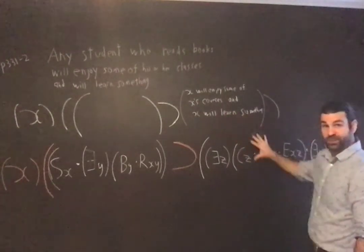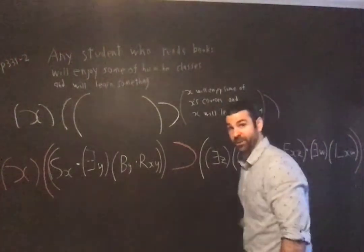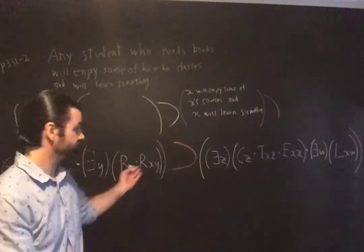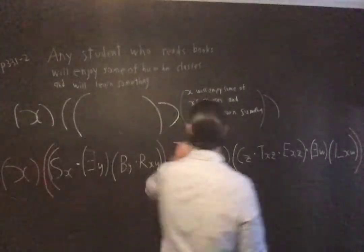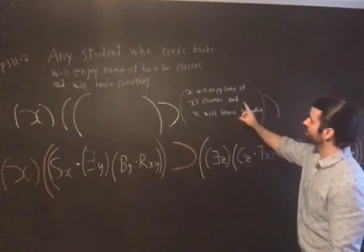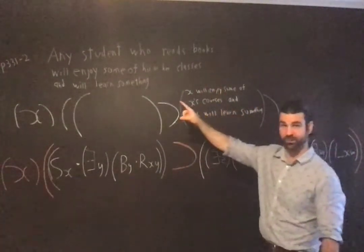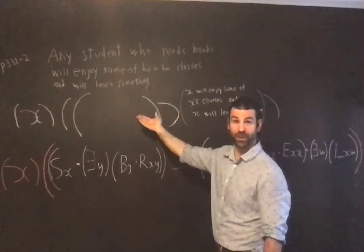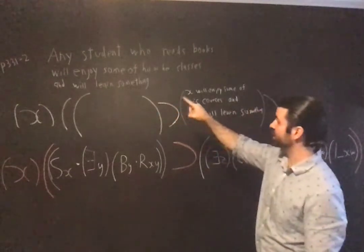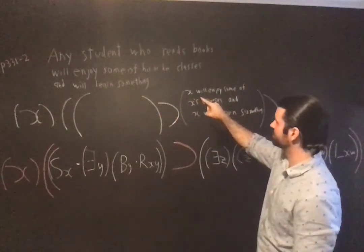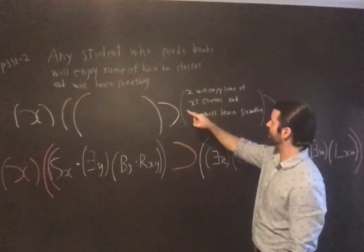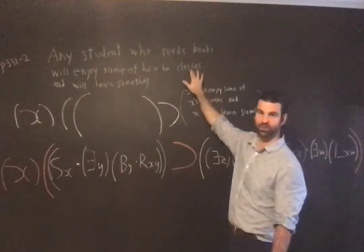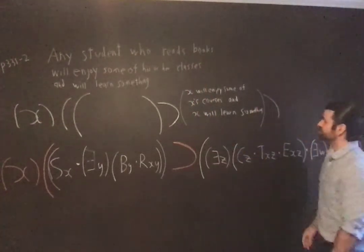And as I translate this, it's going to slide into the right place, namely the predicate of this conditional. So the rephrase is, so the predicate in English that was, will enjoy those in the subject class. What about those in the subject class? They will enjoy some of his or her classes and will learn something. Sorry, those should be courses, I think.